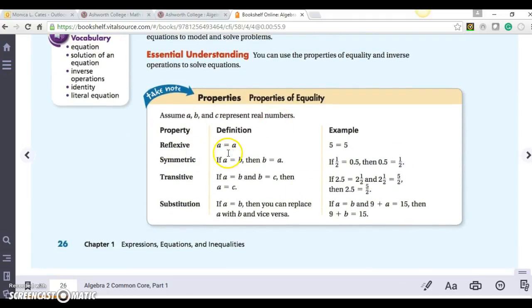We know reflexive means that if I have A equals A, or 5 equals 5, or 6 equals 6. Symmetric: if A equals B, then B equals A. So if I write it in a different form, 1 half is the same as 0.5. And if A equals B and B equals C, then A equals C.